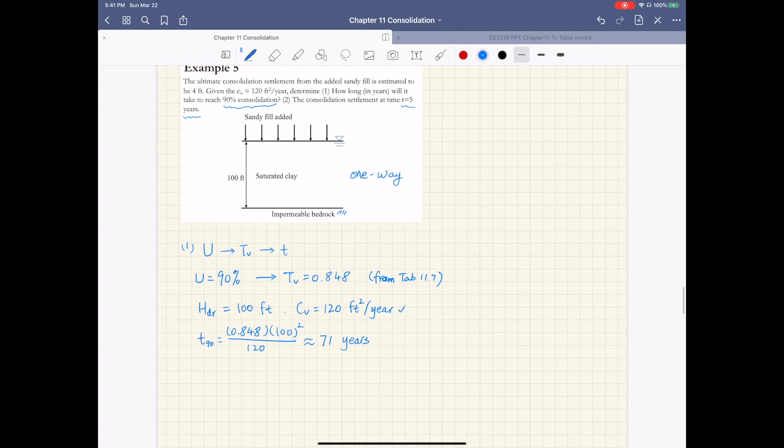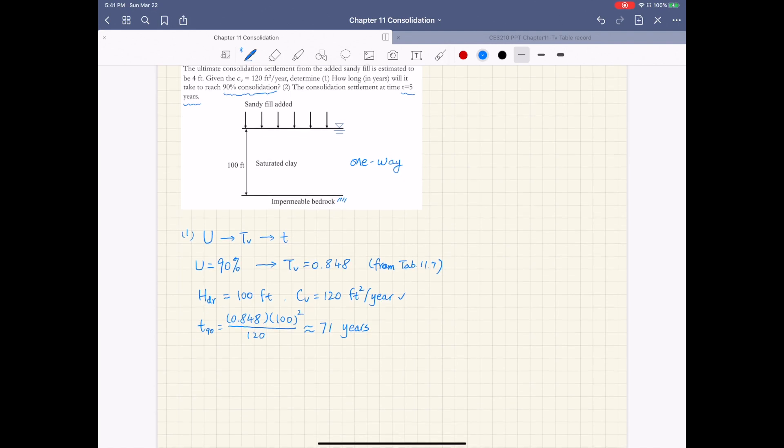So for part two, we're going to work basically backward. We have small letter t, that's the time. We can calculate t sub v, the time factor, from its definition. Then from table 11.7, we can get the average degree consolidation U, and then from which we can get the consolidation settlement at this time as U times the final consolidation settlement, Sc.